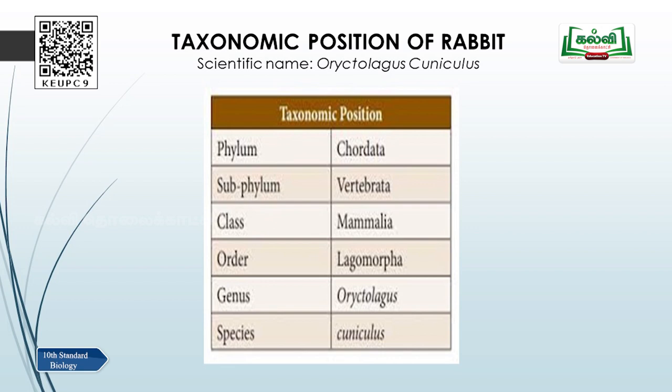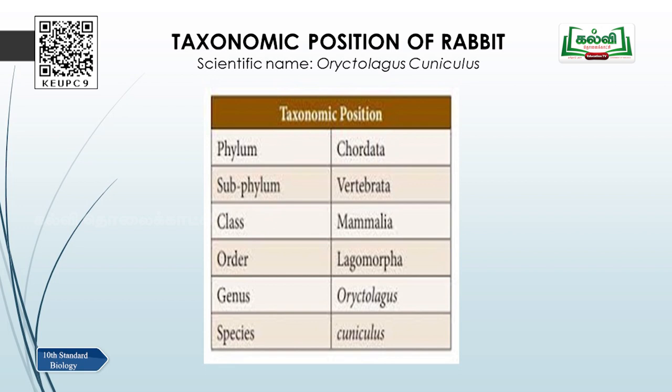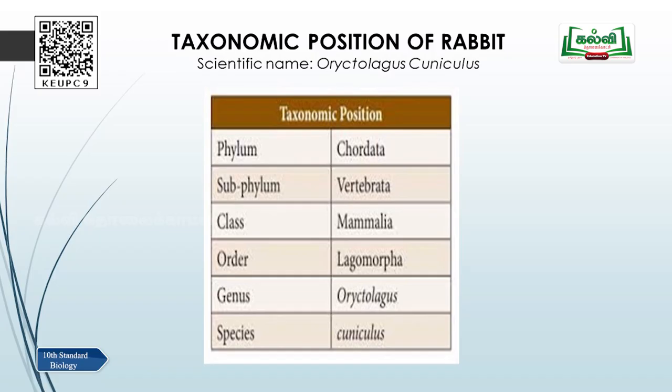The scientific name is Oryctolagus cuniculus, written in italics. The taxonomic position is based on the following divisions: Phylum - Chordata, Subphylum - Vertebrata, Class - Mammalia, meaning they are all mammals because the rabbit is a vertebrate. Order - Lagomorpha, Genus - Oryctolagus, and Species - cuniculus. So genus plus species gives you the scientific name: Oryctolagus cuniculus.